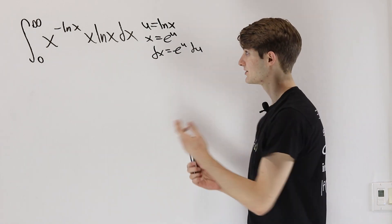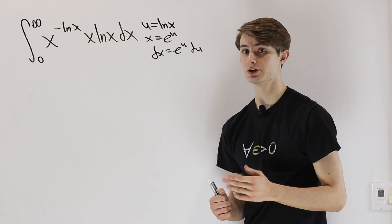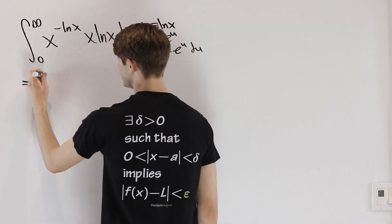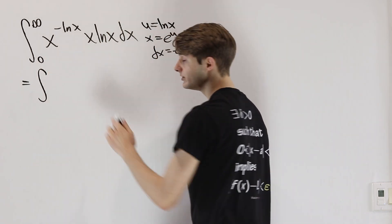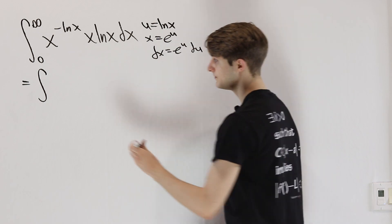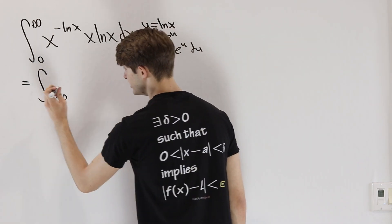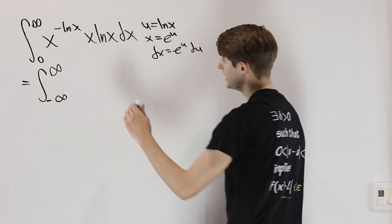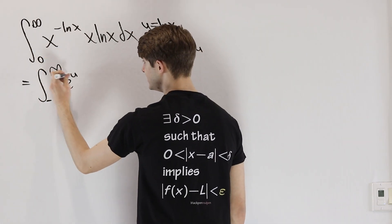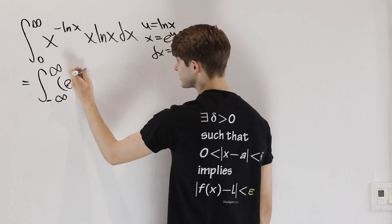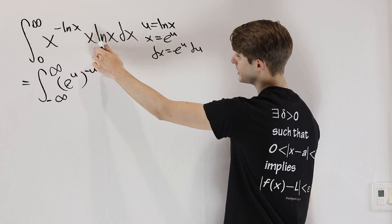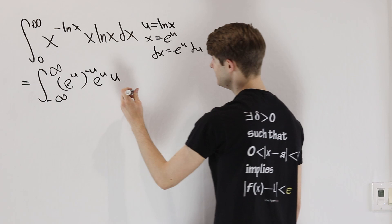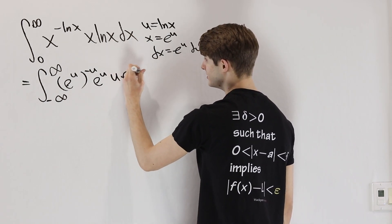That transforms all these x's and natural logs into exponentials, which are often a lot easier to deal with. The new bounds go from natural log of 0 — which approaches negative infinity as we approach 0 from the positive direction — to natural log of infinity, which is still infinity. Now x equals e to the u, negative natural log x becomes negative u, x is again e to the u, and the natural log of x is u. Then dx is e to the u du.